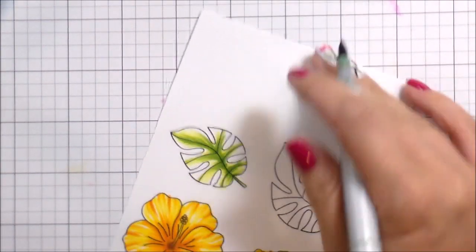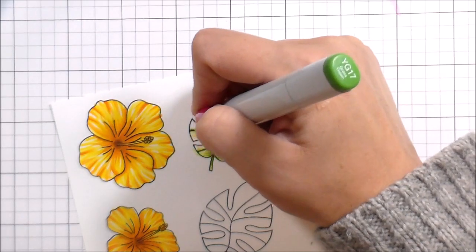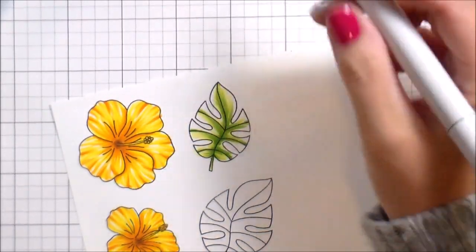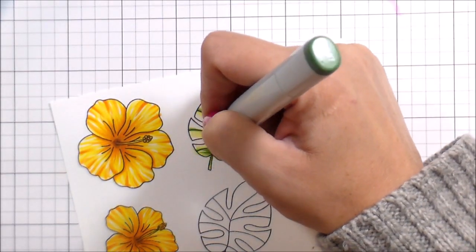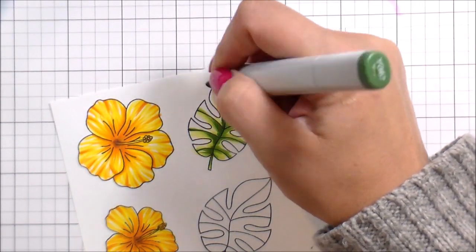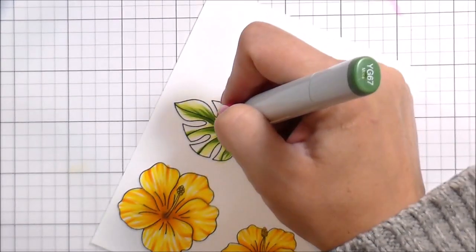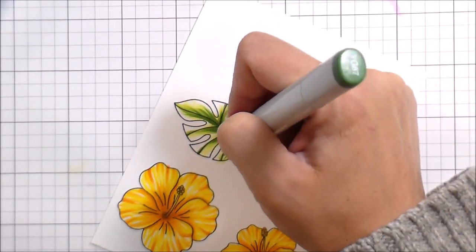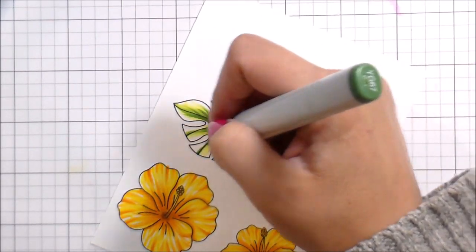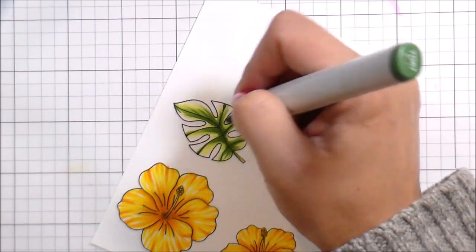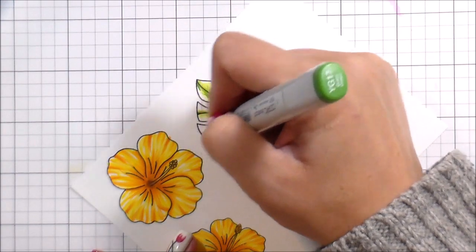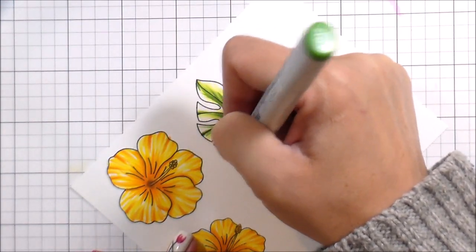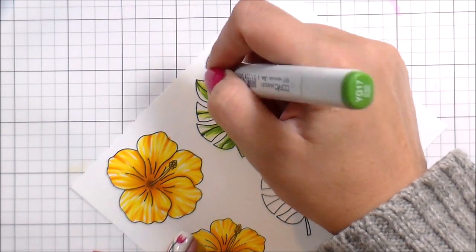Moving on to the leaves. I colored pretty much all of the greenery the same way minus the palm tree. Basically keeping most of the dark color inside where the vein of the leaf is, and then adding just a little bit of dark from the edges of each leaf front. You can see what I'm doing.